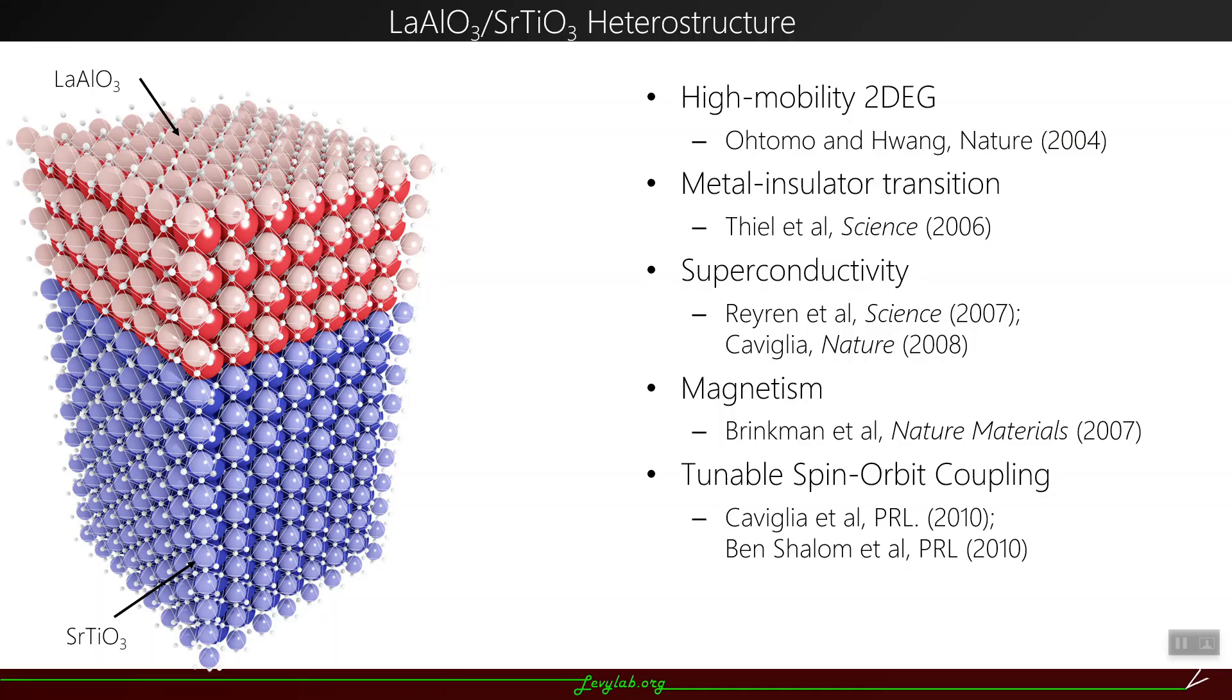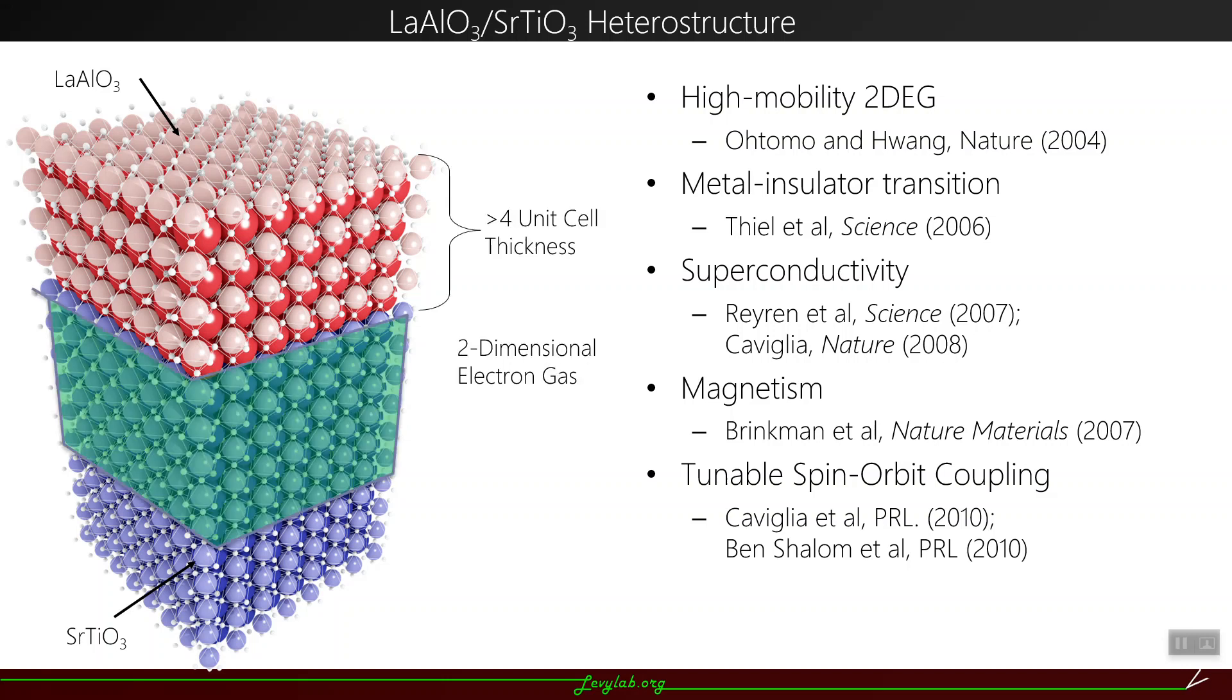Before I begin, I'm going to talk about the material we work with, which is lanthanum aluminate strontium titanate. It exhibits many interesting properties such as a high mobility two-dimensional electron gas, a metal to insulator transition at approximately four unit cell critical thickness, exhibits superconductivity at low temperatures, magnetism, and tunable spin-orbit coupling among other properties.